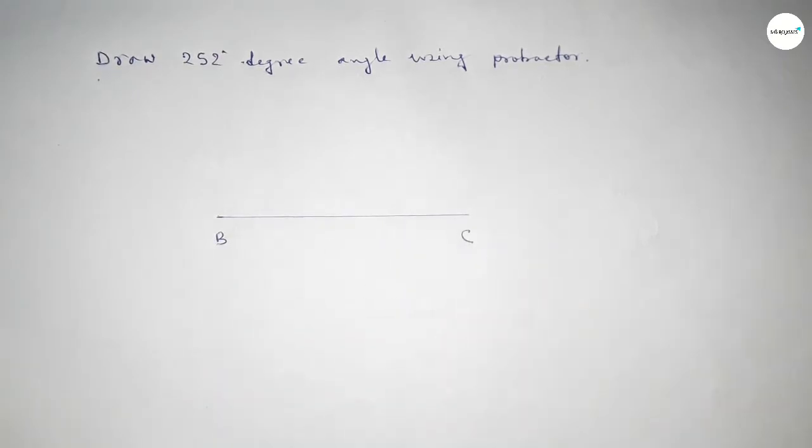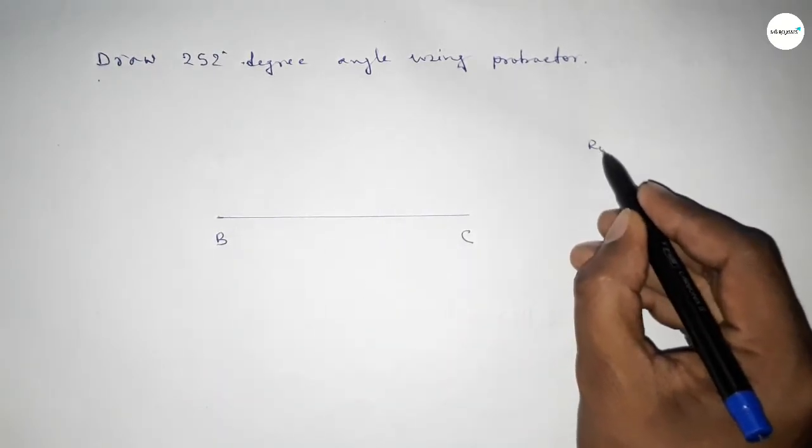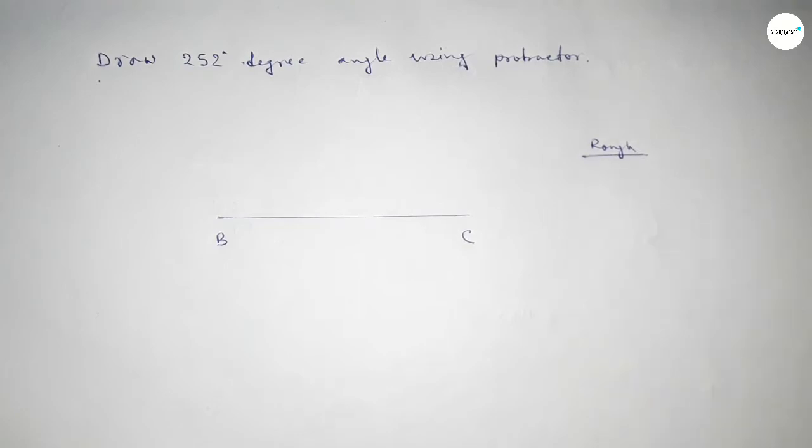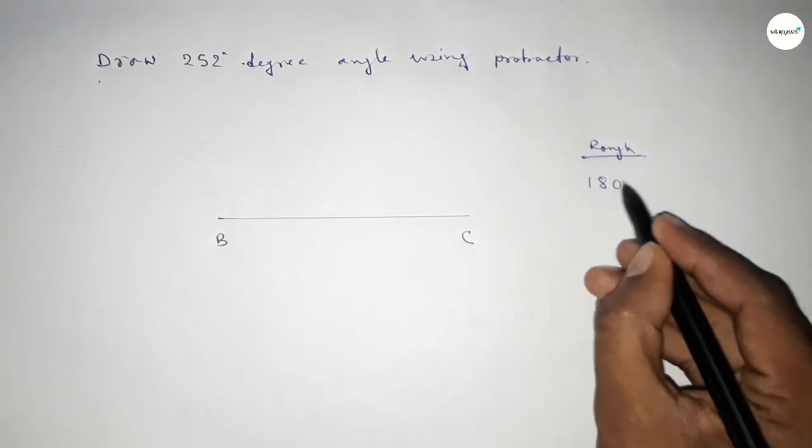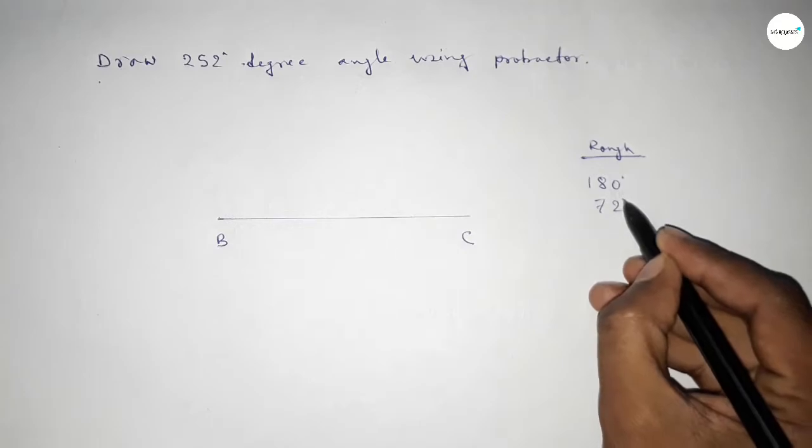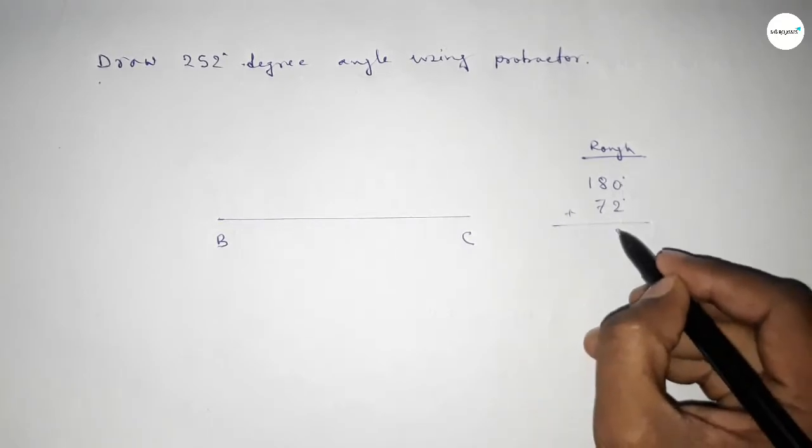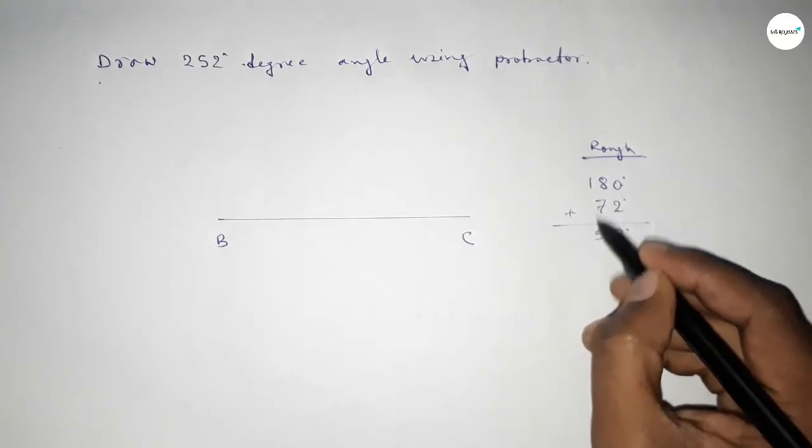Taking here point B and here point C. Now roughly discussing the calculation: if we add 72 degree angle with 180 degree, then we can get 252 degree angle. So 180 plus 72 equals 252. First we have to count 180 degree.